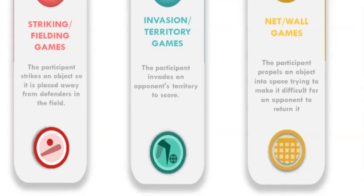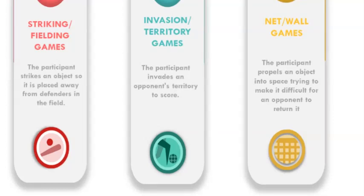Finally, we have invasion games: a form of game where the aim is to invade the opponent's territory and score a goal or a point. These games are typically fast-paced and require a lot of teamwork in order to control the ball, keep possession, move into a scoring position, and prevent the opposition from scoring. Teams share the same playing area as they attempt to both score and prevent the other team from scoring.